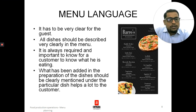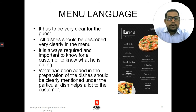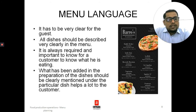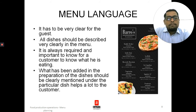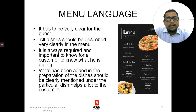Next is menu language. It has to be very clear for the guests. Dishes should not be confusing — it should be clearly written what they are ordering. It is their right to know what they are ordering. All dishes should be described very clearly in the menu, with a one or two line description of the dish. It is always important for customers to know what they are eating; they are paying for it and must know what has been added in the preparation.